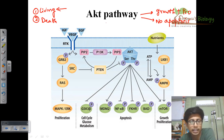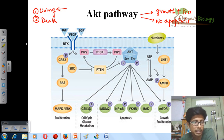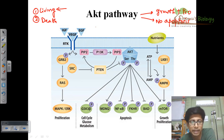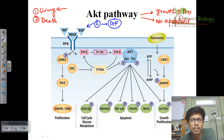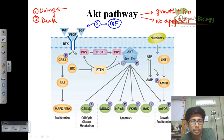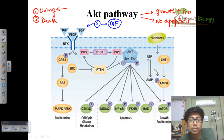Looking at the pathway itself, AKT, like all other pathways, also has a signaling molecule. The signaling molecules in the case of the AKT pathway are growth factors — different kinds of growth hormones and factors like epidermal growth factor, vascular endothelial growth factor, or platelet-derived growth factor, among many others. All these growth factors act as signaling molecules for the AKT pathway.